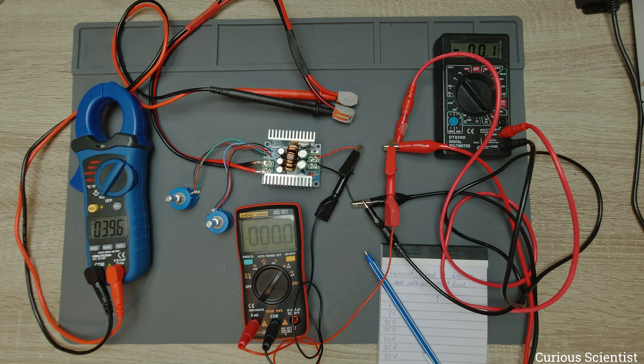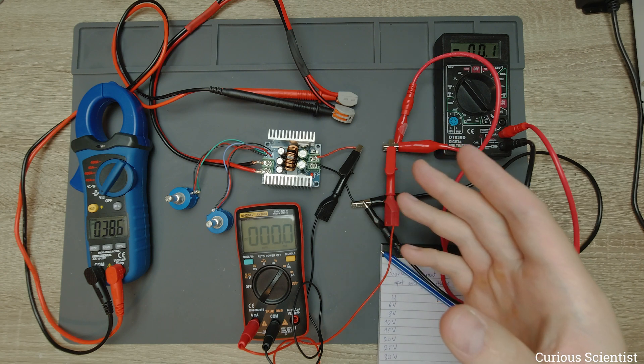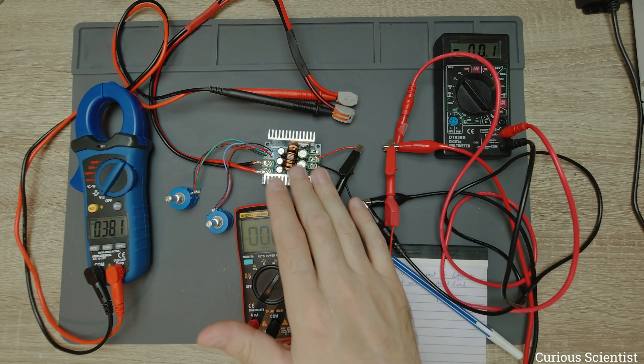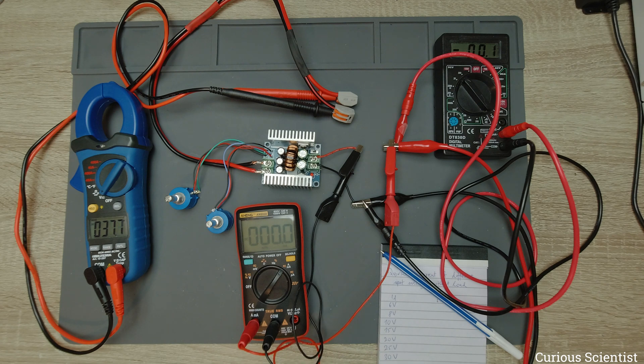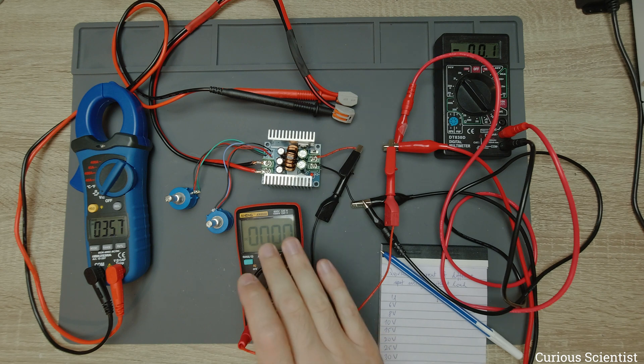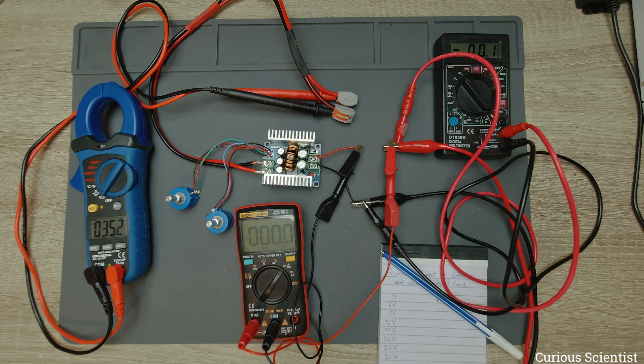What I will do, I made a small list of different input voltages between the minimum and maximum range of this DC-DC converter and between the capabilities of my power supply. We will stop at 30 volts, so I just have a few voltages and I just note down the values.